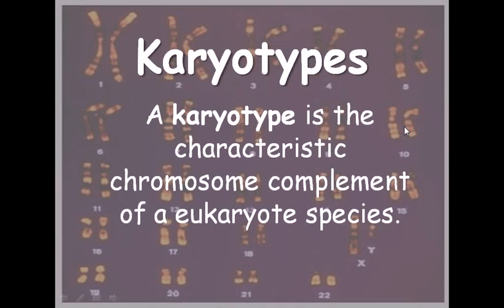Hello guys, this is about karyotypes — unit 3, second lecture. Now, what is a karyotype? A karyotype is the characteristic chromosome complement of a eukaryotic species. It's difficult to learn what karyotyping is by reading a definition, but actually a karyotype denotes the number and the appearance of chromosomes inside the nucleus of a eukaryotic cell.